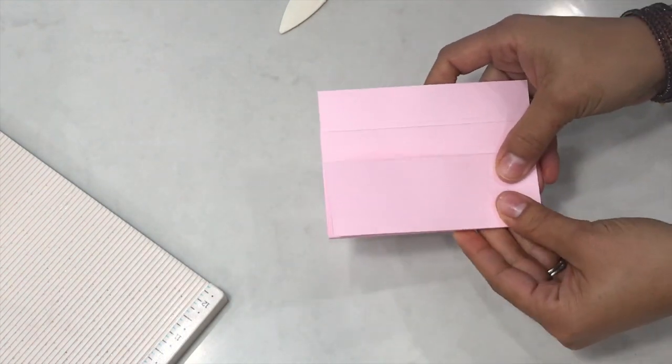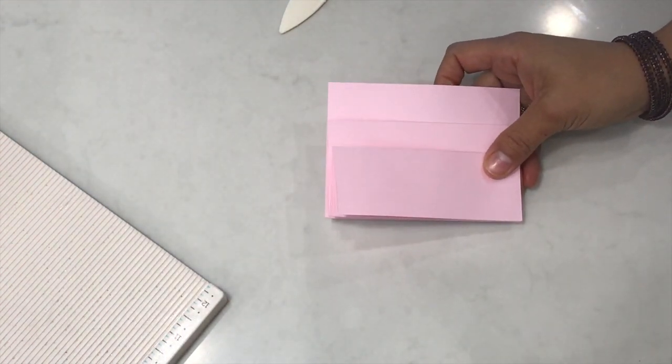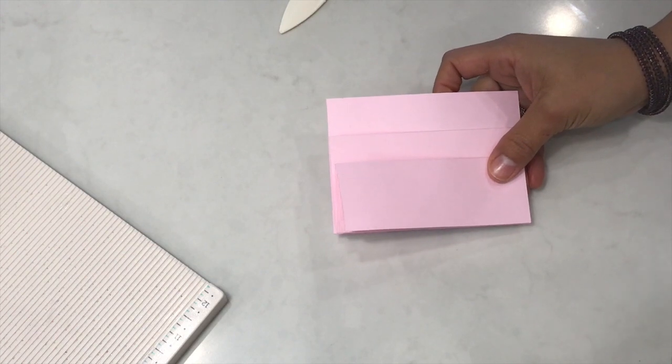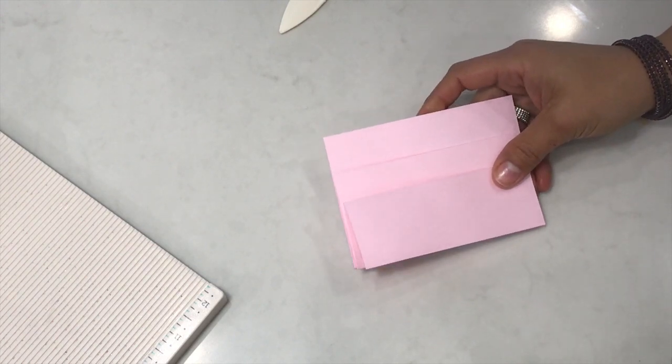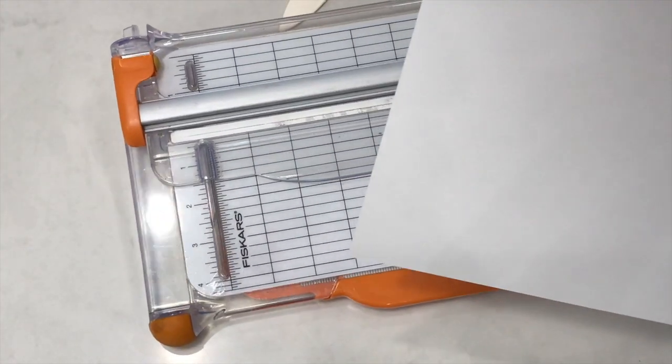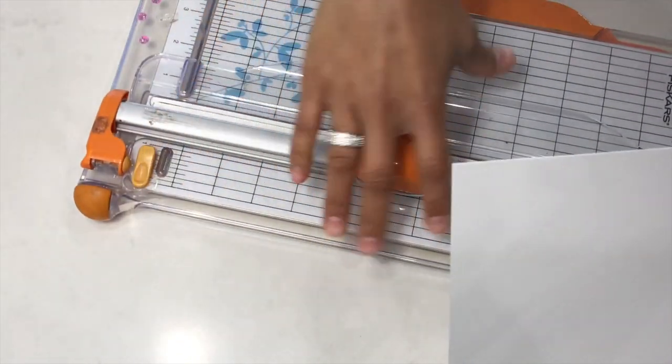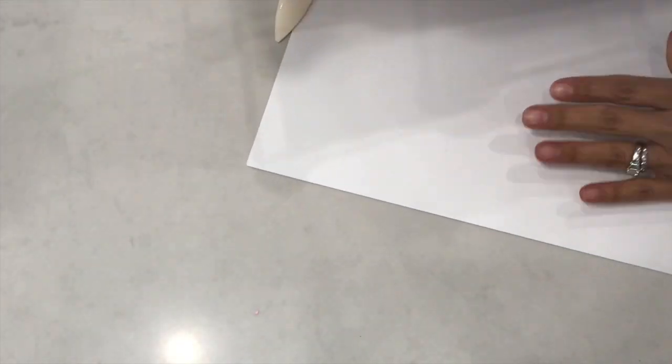The next thing you're going to want to do is create a base for the card. Let me share with you how to create the base. I have another piece of cardstock. I'm just going to use white 110-pound weight cardstock, and we're going to cut the base.